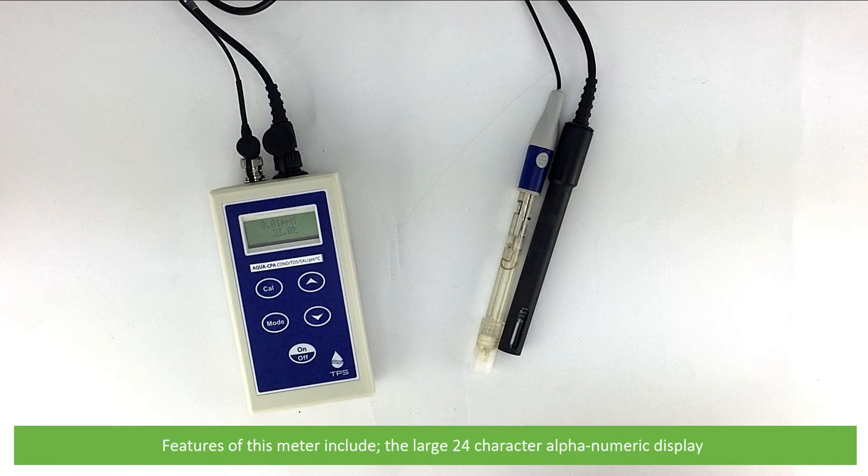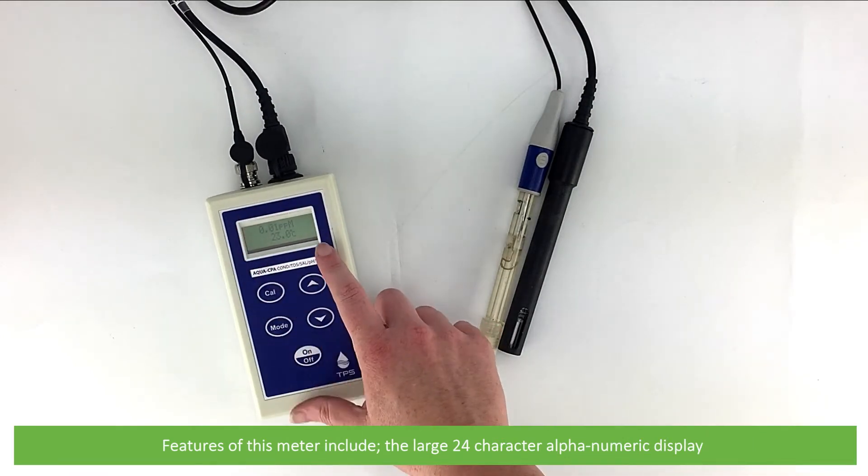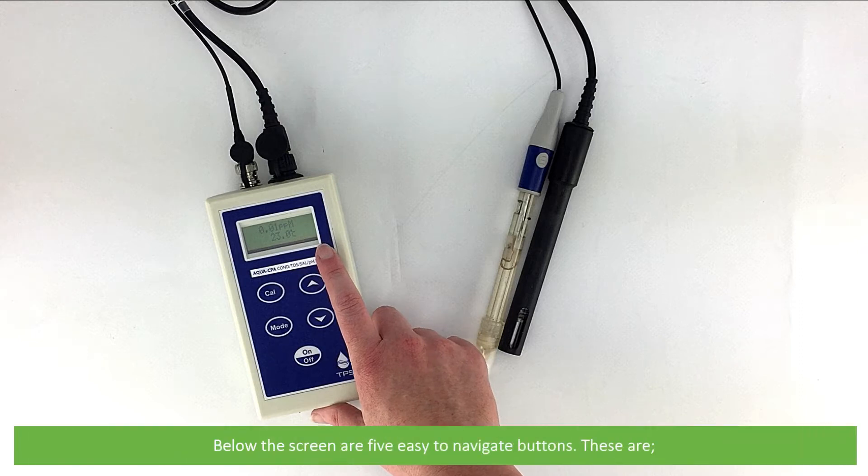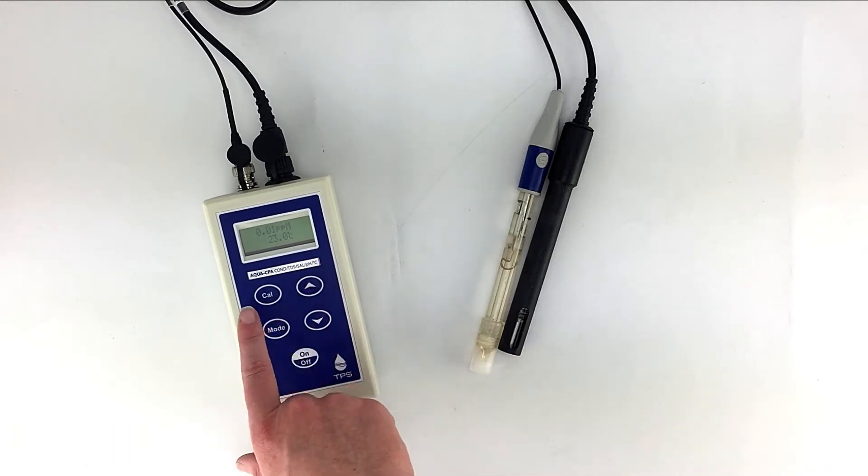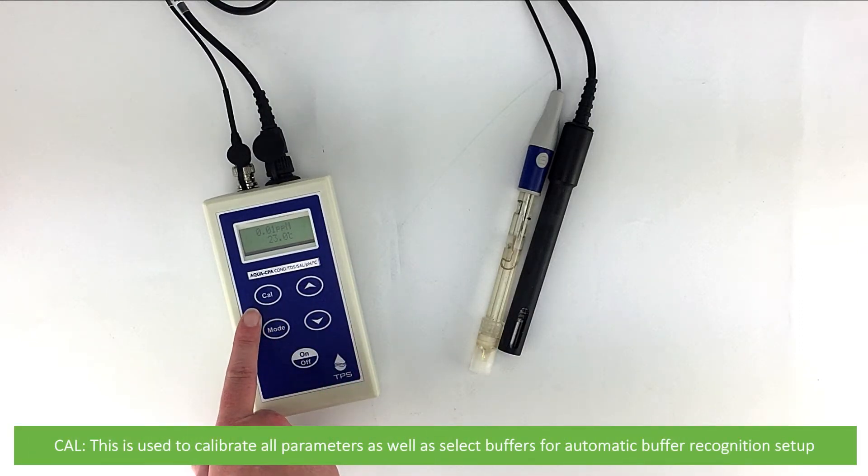Features of this meter include the large 24 character alphanumeric display. Below the screen are five easy to navigate buttons. These are Cal, which is used to calibrate all parameters as well as select buffers for automatic buffer recognition setup.